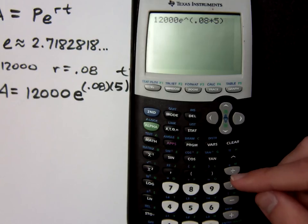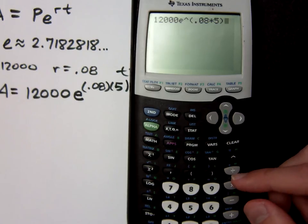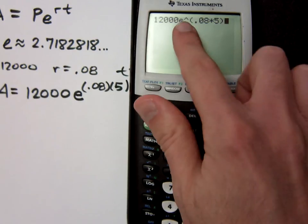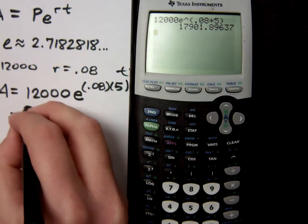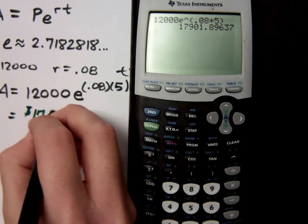There it is. If you do second division, all it does is bring up the e, and you have to do your own caret and parentheses. If you do second ln, it brings up e, caret, and parentheses already for you. Let's see what we get here for this guy.